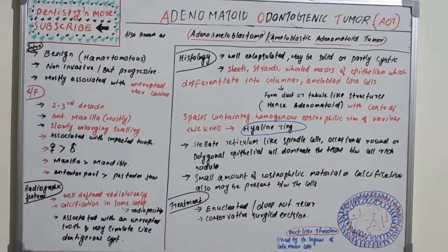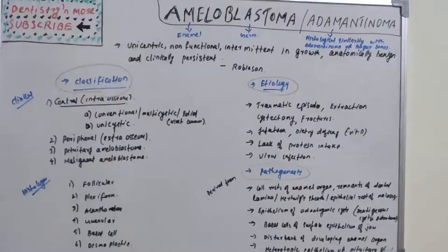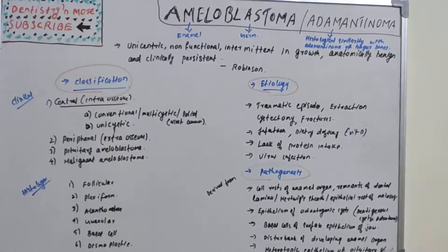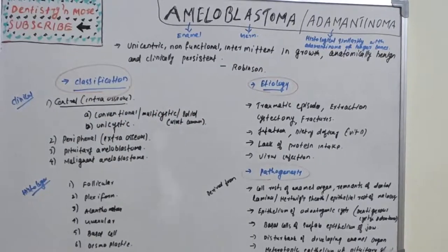Hello everyone, welcome back to a new session on dentistry and more. Today's topic is ameloblastoma, or adamantinoma — the most important topic in oral pathology under odontogenic tumors. We have already seen AOT and CEOT; now the most important one is ameloblastoma.